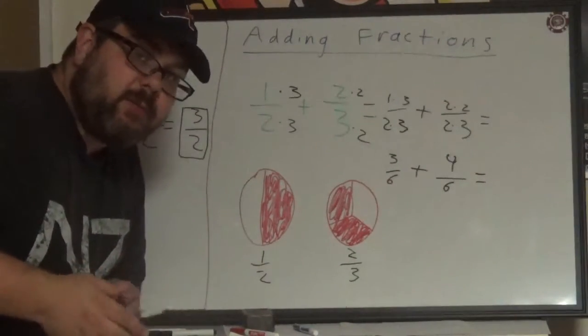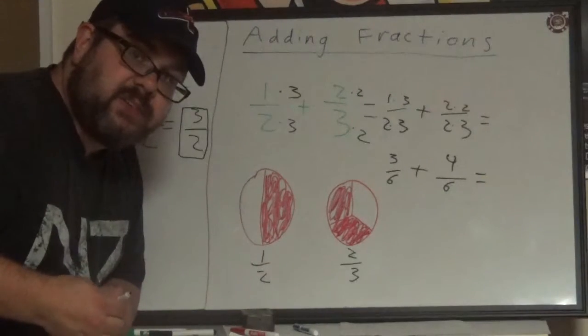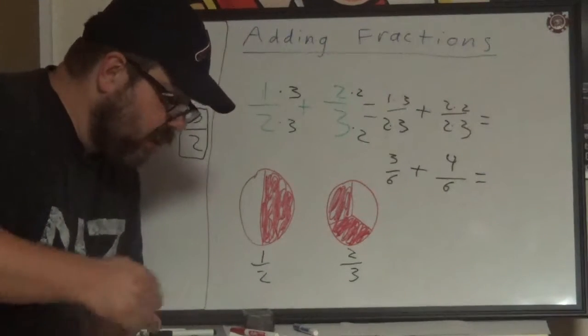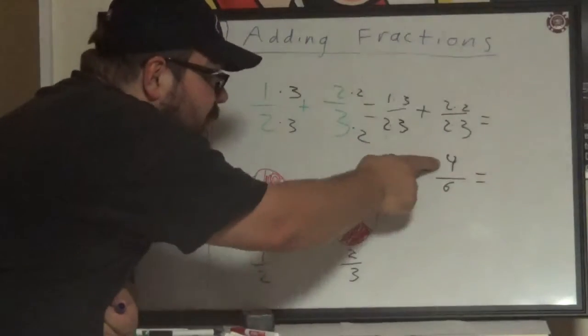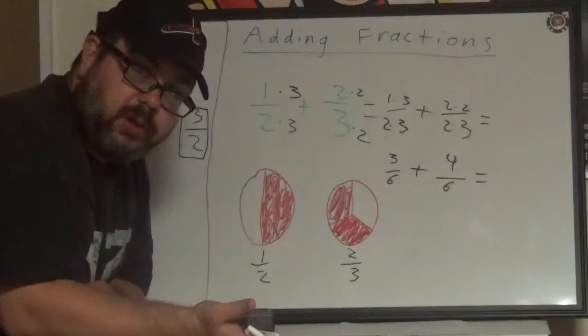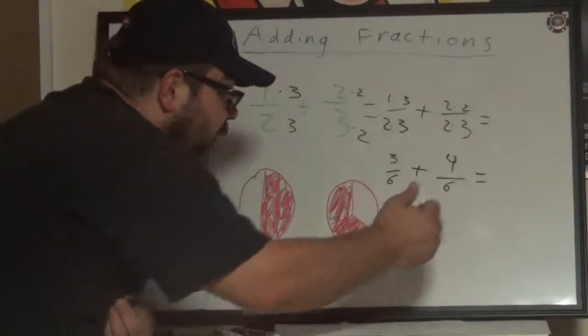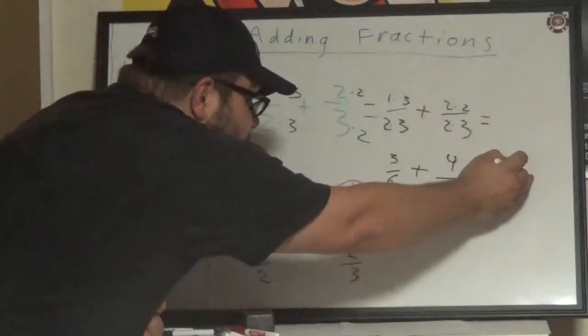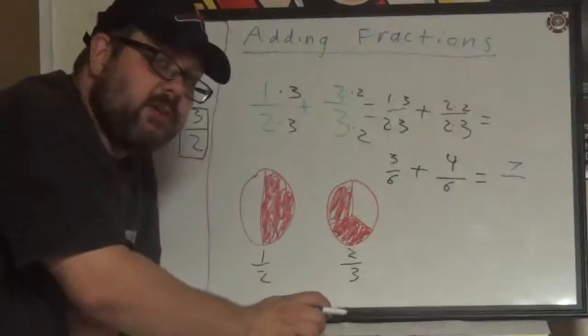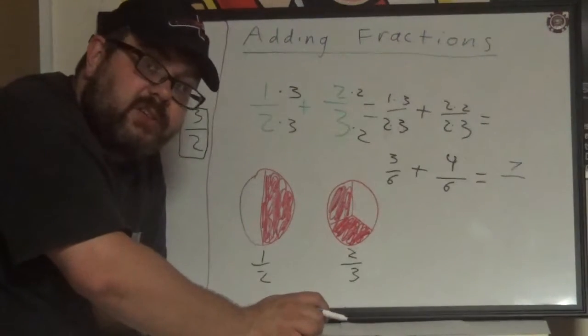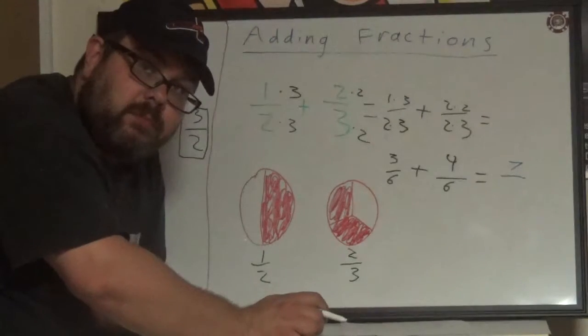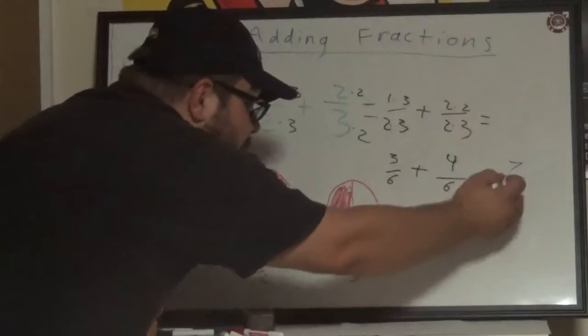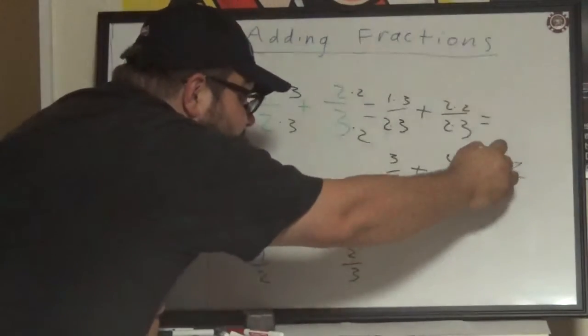Now we have a common denominator, and hopefully you can see that this problem is now a lot easier. Three plus four, the two numerators are added together, three plus four is seven. Now remember that the denominators stay the same once they're common. We've created a common denominator, so now it can stay the same.